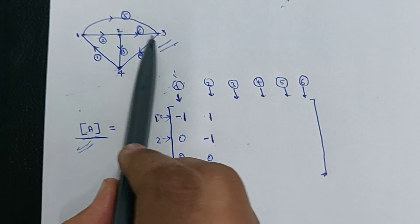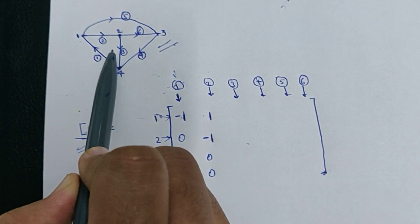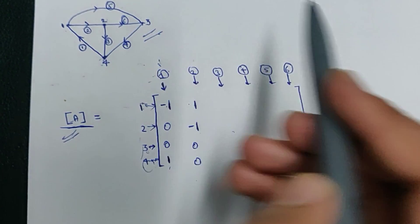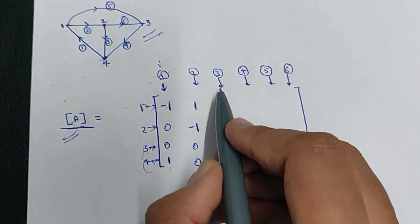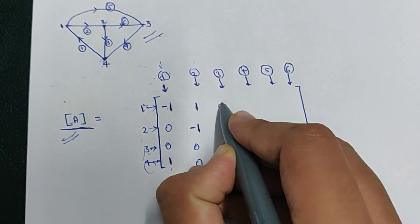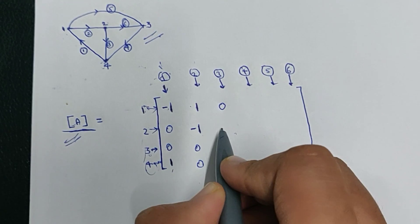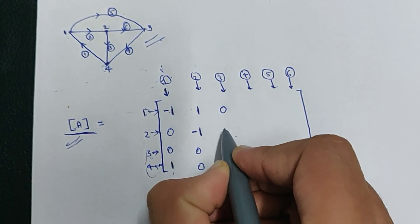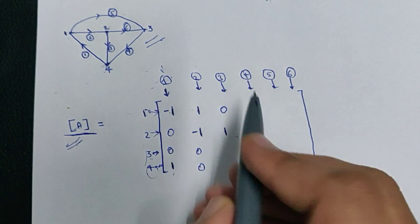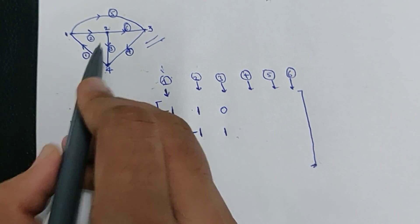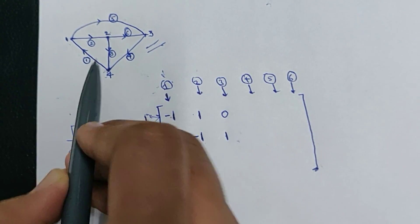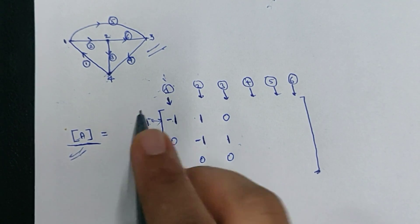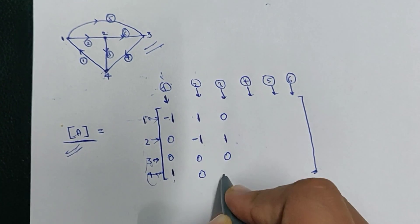Similarly, for branch three, the current is flowing from node 2 to node 4. The first node doesn't have any involvement, therefore zero. The second node — current is flowing from it — therefore +1. The third node doesn't have any involvement, so zero. For the fourth node, current is flowing into it, therefore -1.